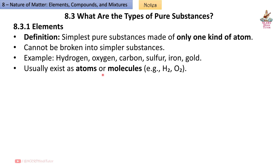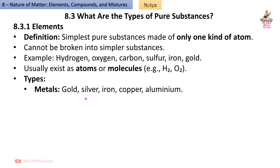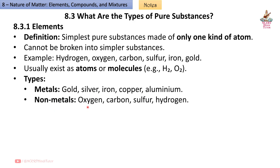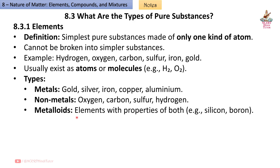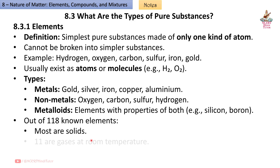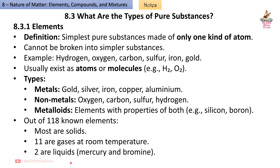Elements usually exist as atoms or molecules, e.g. H₂, O₂. Types: Metals — Gold, Silver, Iron, Copper, Aluminium; Non-metals — Oxygen, Carbon, Sulfur, Hydrogen; Metalloids — elements with properties of both, e.g. Silicon, Boron. Out of 118 known elements, most are solids, 11 are gases at room temperature, and 2 are liquids — Mercury and Bromine.